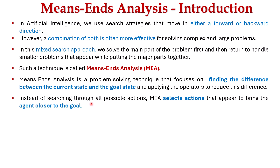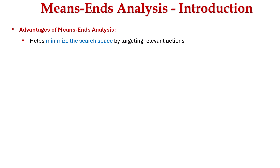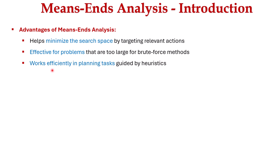Instead of searching through all possible actions, means-ends analysis selects the actions that appear to bring the agent closer to the goal. In conclusion, 'means' refers to the available actions, 'ends' refers to the desired goal, and 'difference' represents the gap between the current state and goal state. It helps minimize the search space by targeting relevant actions and works effectively for large problems guided by heuristic techniques.